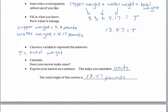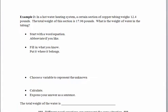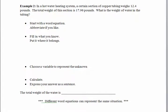Let's check out the next page. So we have a hot water heating system. Sounds kind of familiar. Certain section of copper tubing weighs, okay, different section, different weight, 12.4 pounds. And the total weight of this section is 17.96 pounds. We would like the weight of the water. The situation hasn't changed. So we still have exactly the same word equation that we had before. The copper weight plus the water weight is equal to the total weight. But this time we know different things. So this word total tells us that there's an addition happening. But it doesn't mean that we're adding the numbers that are sitting in the problem.